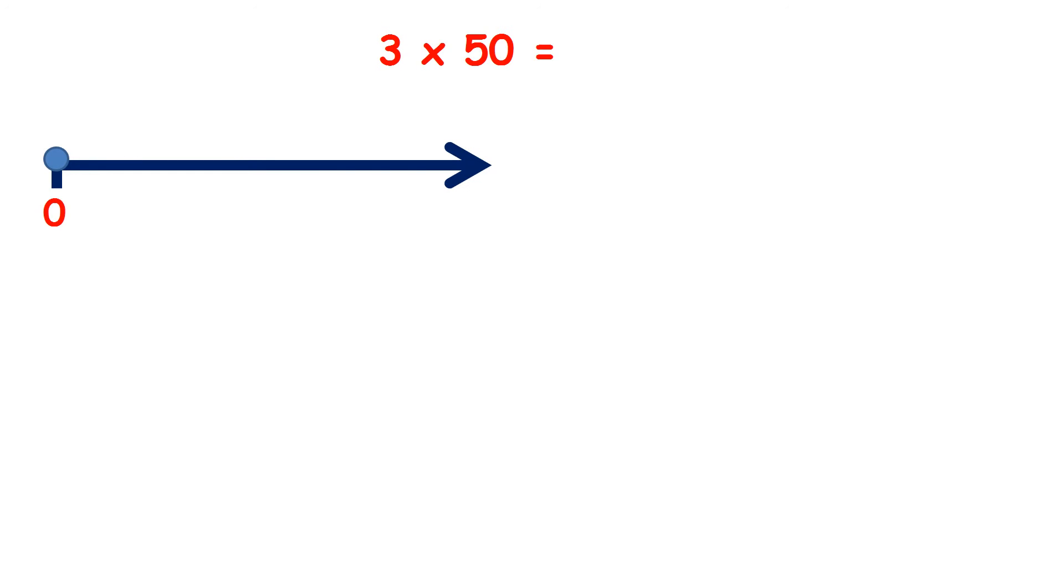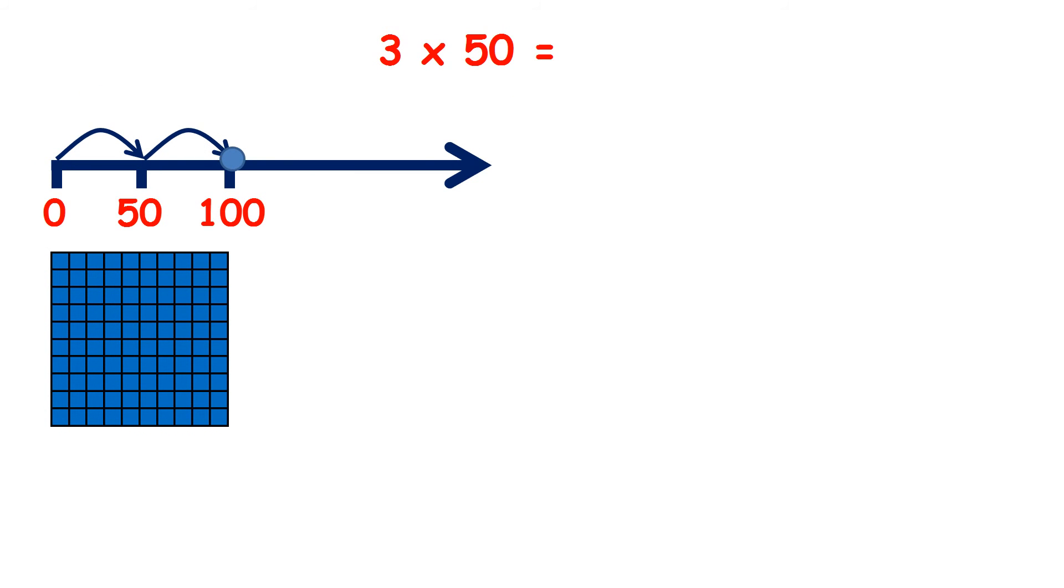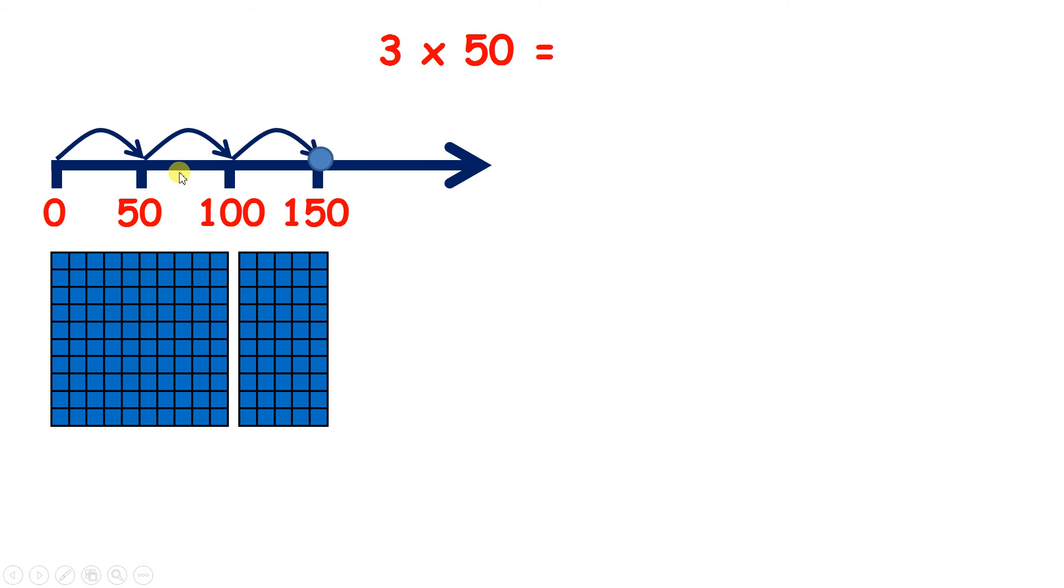Now for 3 times 50, what are we going to do? We need to count up in 50s three times. So, what is 3 times 50? We have 50, 100, 150. So, 3 times 50 equals 150.